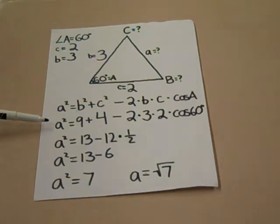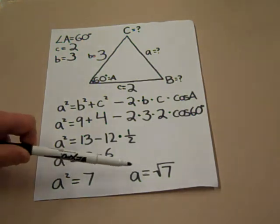Cosine of 60 degrees is 1 half, so the previous equation reduces to A squared equals 13 minus 12 times 1 half. Next is A squared equals 13 minus 6. Then A squared is equal to 7, so A is equal to the square root of 7.